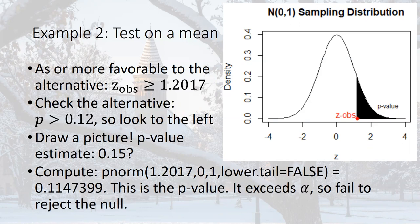The lower.tail = FALSE argument is used when looking at the right-sided shaded portion. If we had a less-than alternative, we would use lower.tail = TRUE. The p-value is approximately 0.115. Comparing to alpha of 0.05, the p-value is greater than alpha, so we fail to reject the null hypothesis — even though we observed 17%, that is not convincing enough evidence to reject the hypothesis that the true probability is 12%.